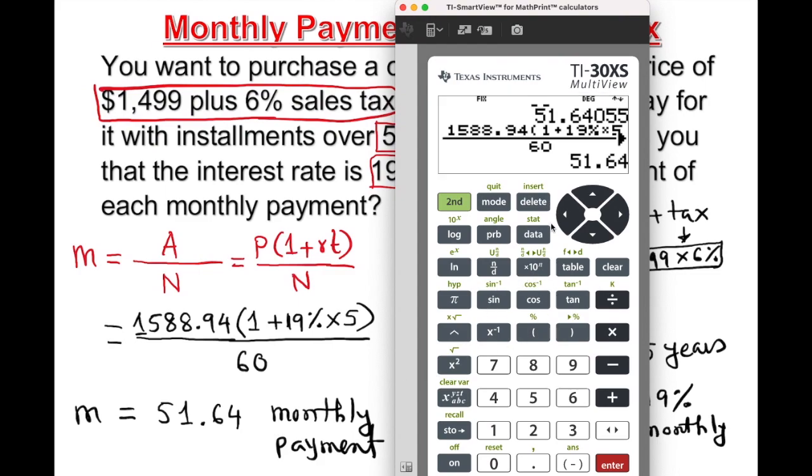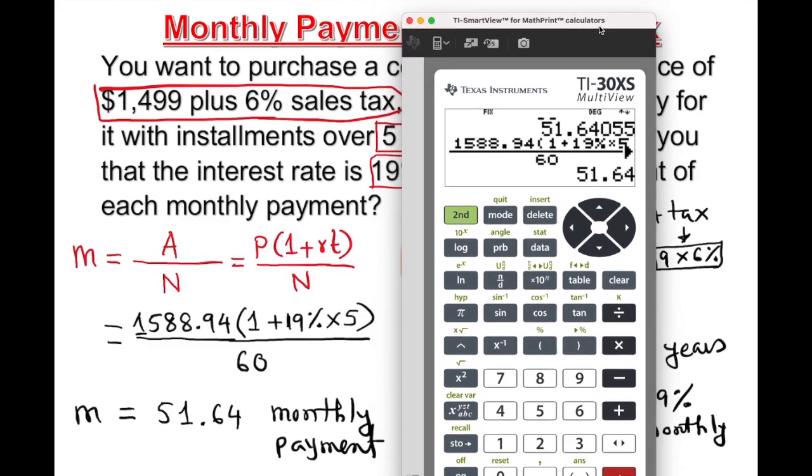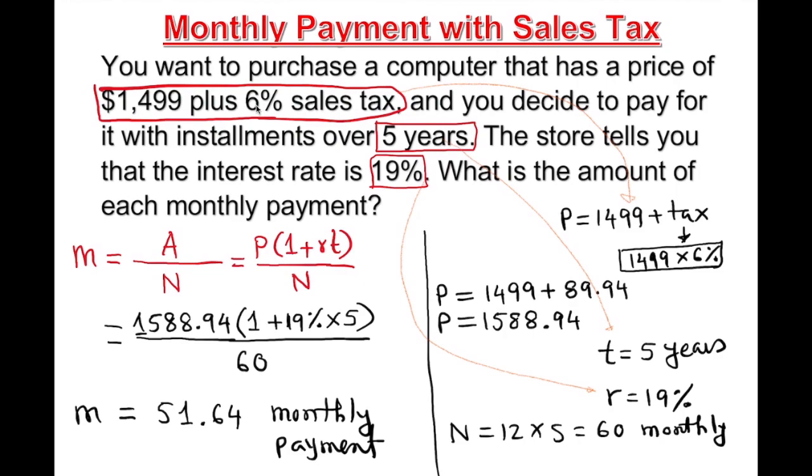That's how you find the monthly payment when sales tax is not included. You have to add the sales tax. Remember you're not using the old price, you're using this new P for the substitution. That's how you get your answer.